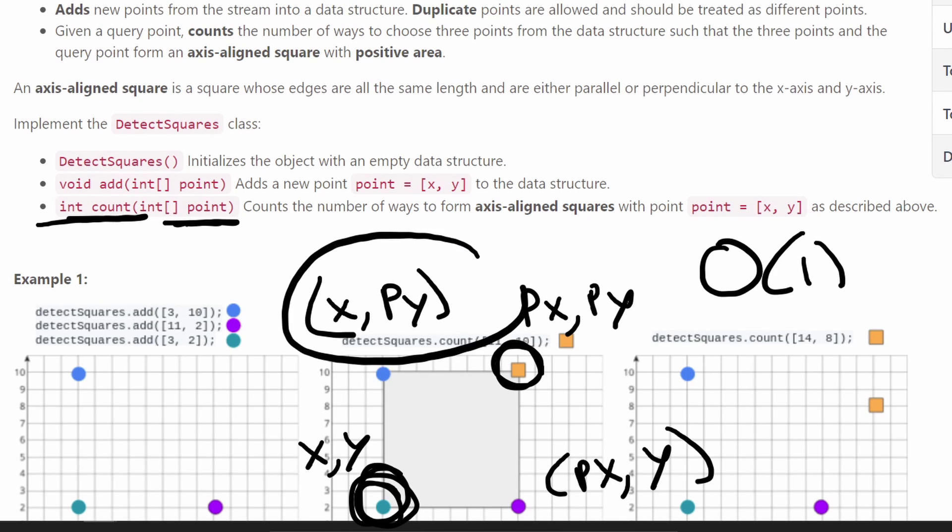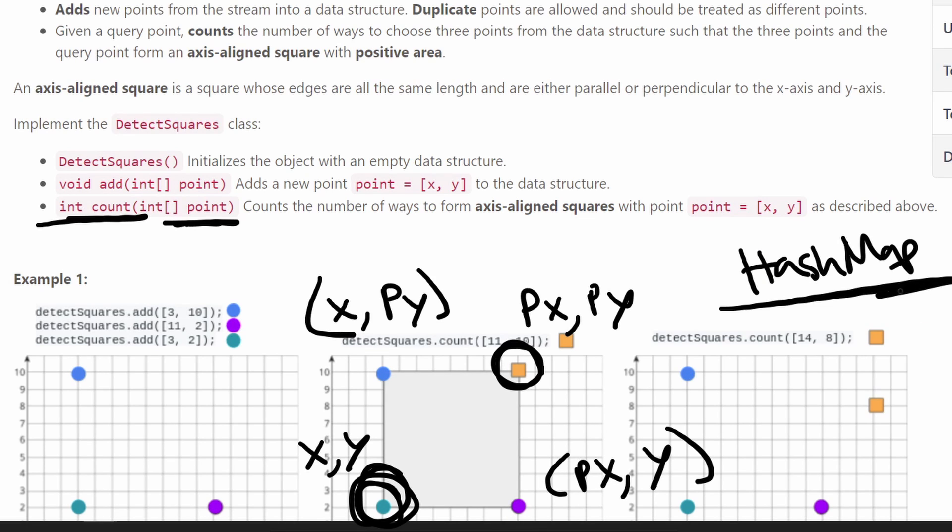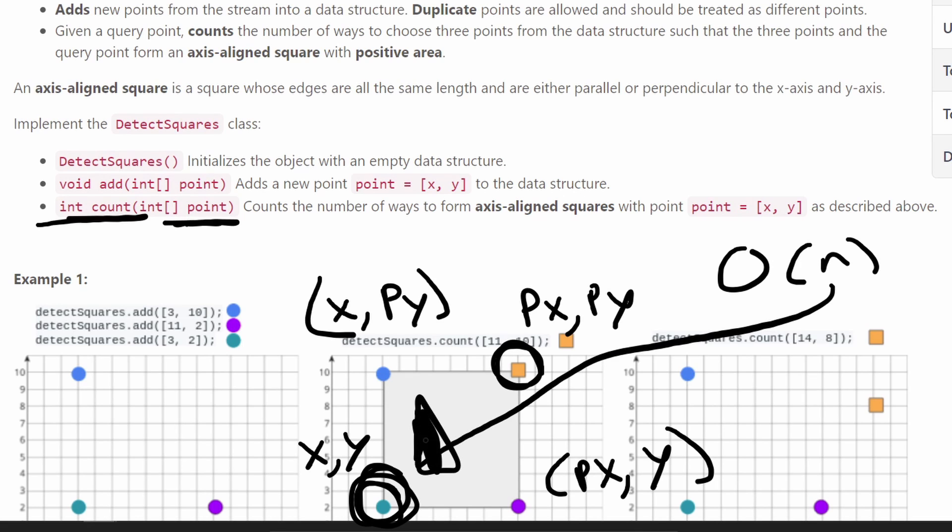But remember, we could maybe have three copies of this top left and maybe we could have two copies of the bottom right. So we want to take the counts of them and then multiply them together. And we can do that easily with our hash map because with our hash map, we are storing the counts of each of these points that we have in our input. And remember, the O of N loop is only iterating through the diagonal list of points.